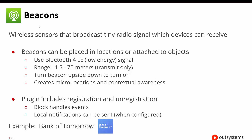There is a beacons plugin. Beacons are wireless sensors that broadcast tiny radio signals that the device can receive and then react to. The beacons can be placed in different locations, they can be attached to objects, they use Bluetooth low energy, and you're limited to a range of about 70 meters. The beacon itself will be on when sitting normally; if you turn it upside down it will shut itself off.